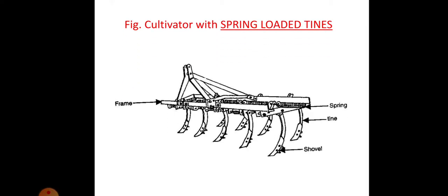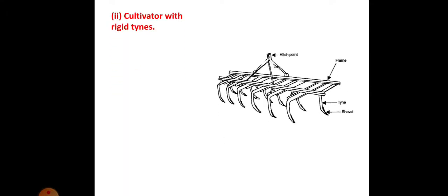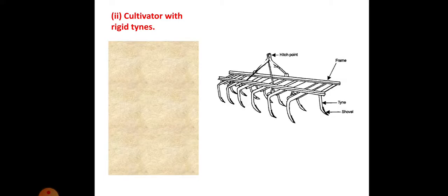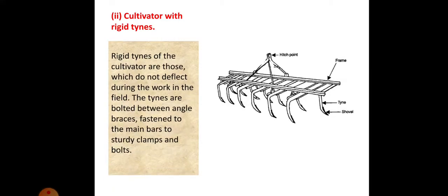This is also a diagram of a spring tine cultivator. Cultivator with rigid tines: rigid tines of the cultivator are those which do not deflect during work in the field. The tines are bolted between angle braces fastened to the main bars with sturdy clamps and bolts.